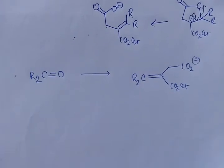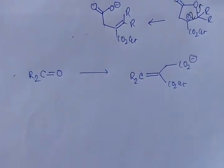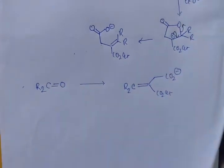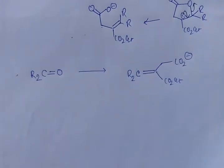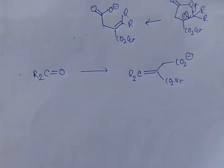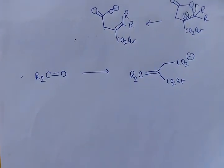So for Stobbe condensation an ester with dibasic center is required and ketone without any alpha hydrogen is required. Thank you.